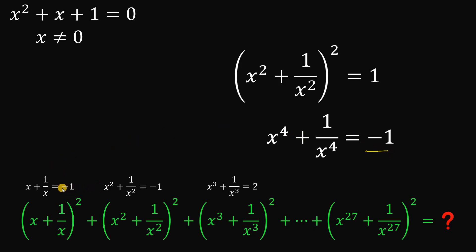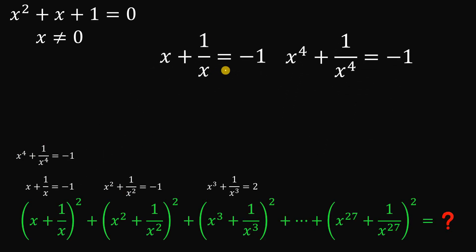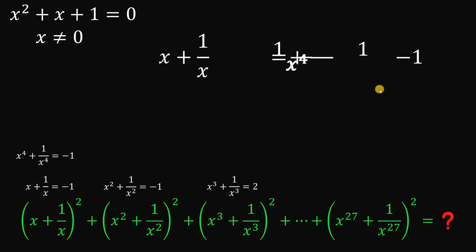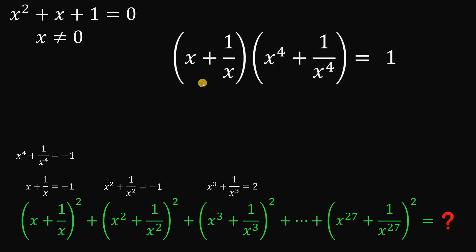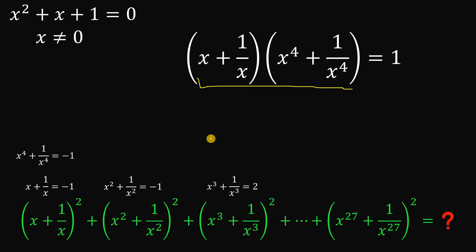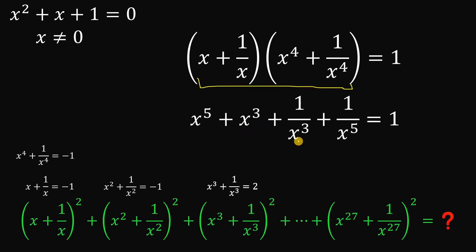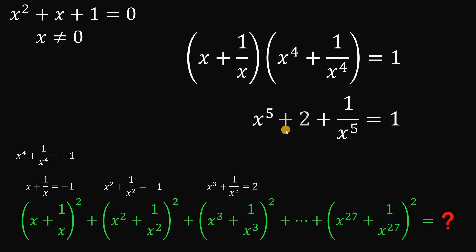For x⁵ + 1/x⁵, we multiply (x + 1/x) by (x⁴ + 1/x⁴). That gives (−1)(−1) = 1, and expanding the left side yields x⁵ + x³ + 1/x³ + 1/x⁵. We know x³ + 1/x³ = 2, so subtracting 2 from both sides gives x⁵ + 1/x⁵ = −1.